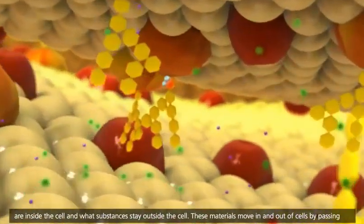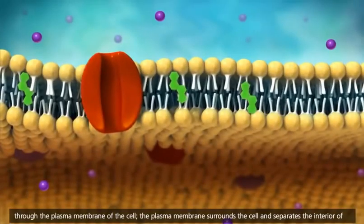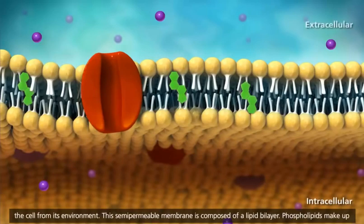These materials move in and out of cells by passing through the plasma membrane of the cell. The plasma membrane surrounds the cell and separates the interior of the cell from its environment.